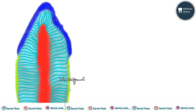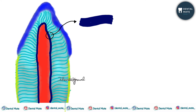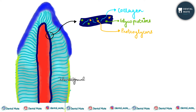First of all, let us talk about pre-dentine. It is the first formed layer of dentine. It is unmineralized and consists of collagen, glycoproteins, and proteoglycans. It is similar to the osteoid of bone.